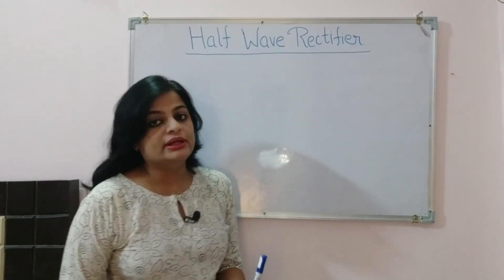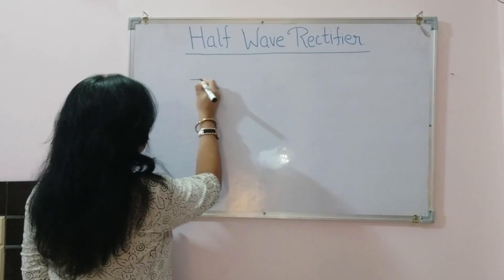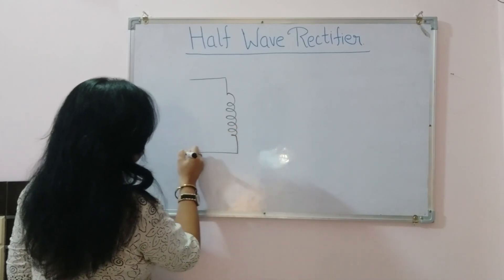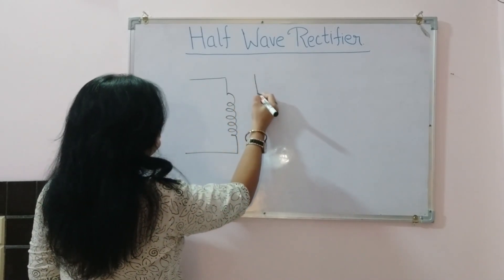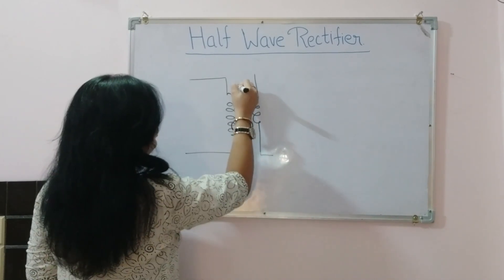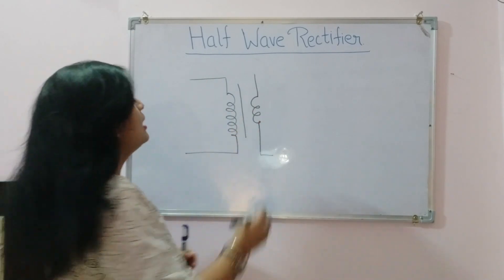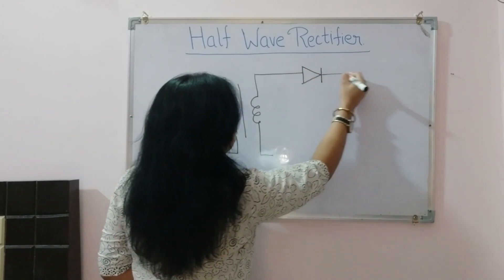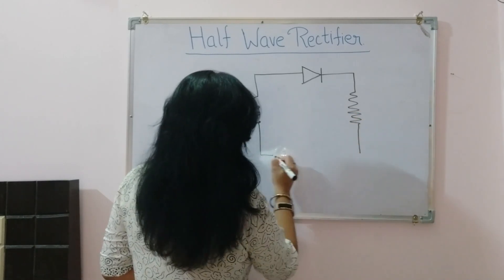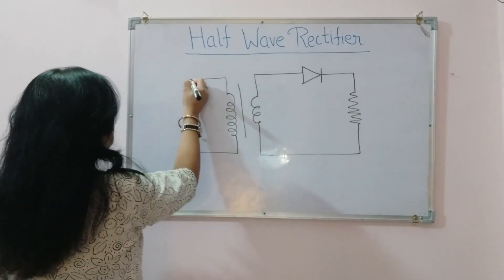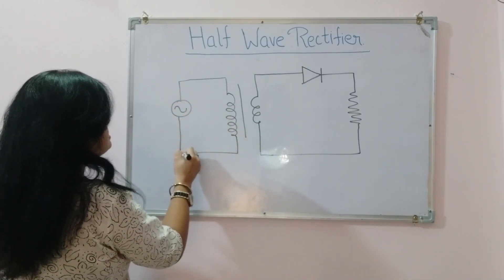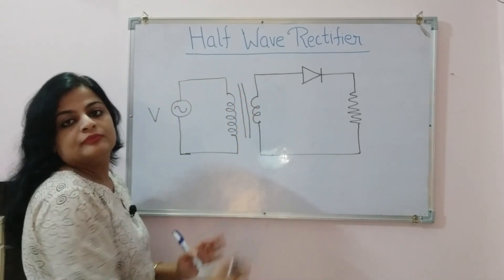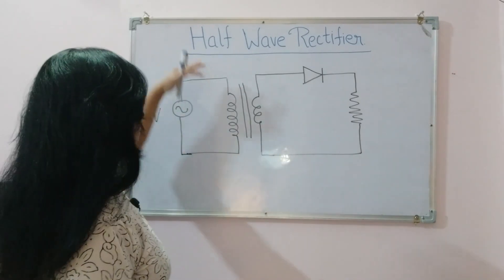Let's start by drawing the half wave rectifier circuit. First, here is a step-down transformer — this is the transformer's primary side and this is the secondary side. Then we have the diode, and at last, this is the resistive load. So this is our half wave rectifier circuit. Let's see the components of the half wave rectifier circuit.